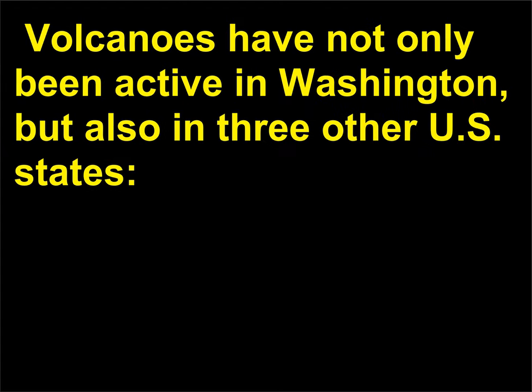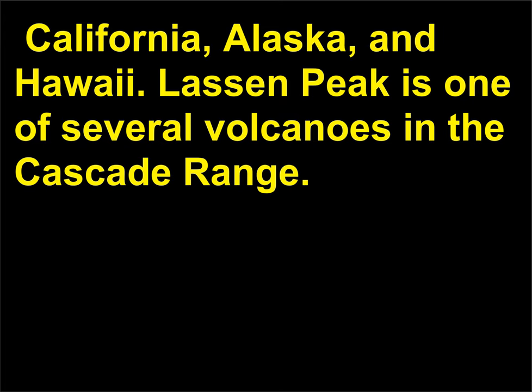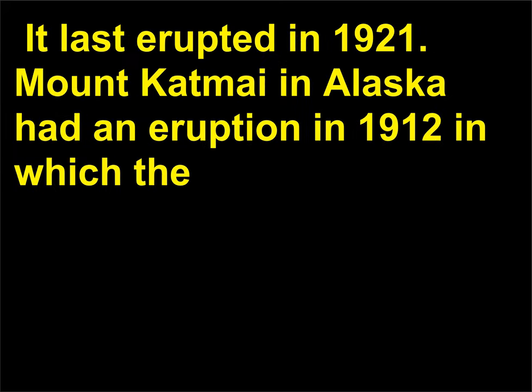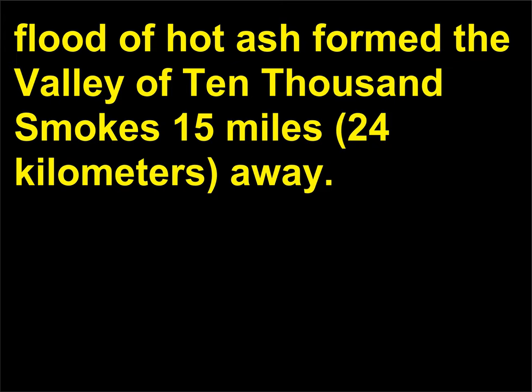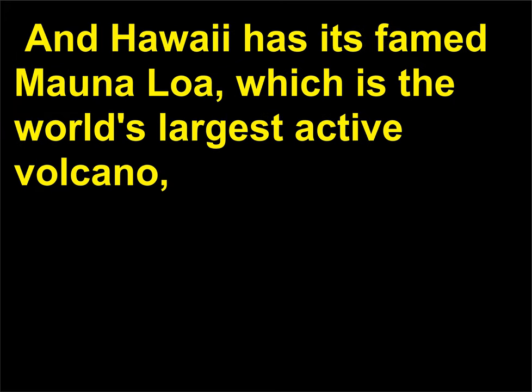Volcanoes have not only been active in Washington, but also in three other U.S. states: California, Alaska, and Hawaii. Lassen Peak is one of several volcanoes in the Cascade Range and last erupted in 1921. Mount Katmai in Alaska had an eruption in 1912 in which the flood of hot ash formed the Valley of 10,000 Smokes 15 miles away. And Hawaii has its famed Mauna Loa, which is the world's largest active volcano, being 60 miles (97 kilometers) in width at its base.